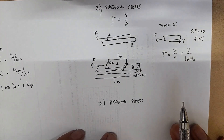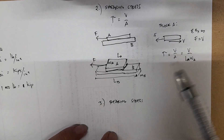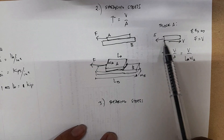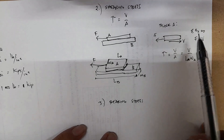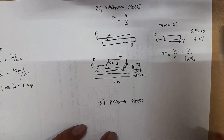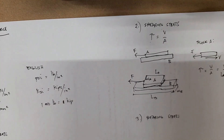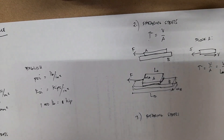The whole area at the bottom of block A is resisting the external force F. The resisting force is parallel to the resisting area. To summarize: normal stress is when the force and the area are perpendicular to each other, and shearing stress is when the force and the area are parallel to each other.